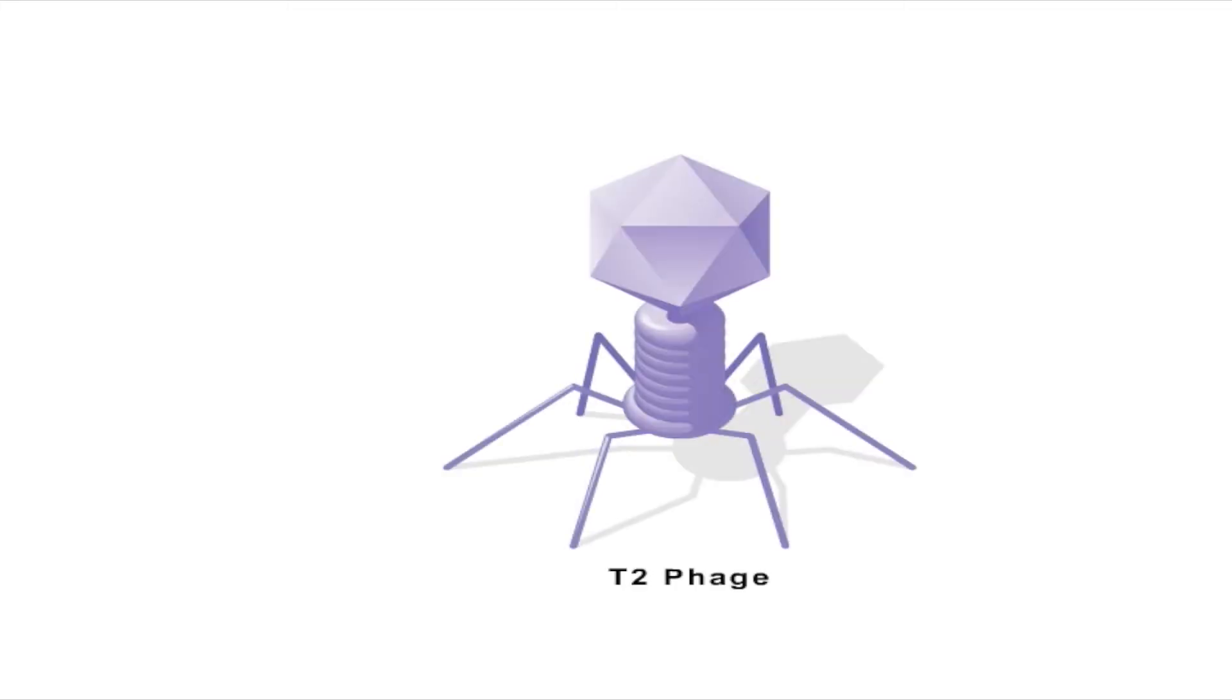In 1953, Alfred Hershey and Martha Chase confirmed DNA's preeminent role in genetics by demonstrating that DNA is the genetic material of a virus called phage T2.